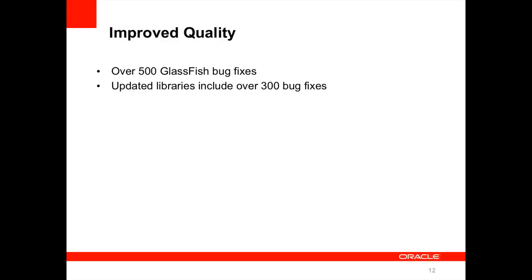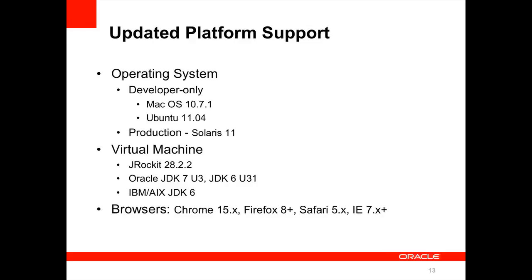We've made quite a few quality improvements. The core of GlassFish server itself has had over 500 bug fixes, and the included libraries alone have had over 300 bug fixes. This is the second bug fix release for GlassFish server, and you should notice overall improved quality. We've also updated platform support — this includes incremental updates to operating systems we already support, such as Mac and Ubuntu from a developer perspective. We've added Solaris 11 support and JRockit support — this is the first 3.1 release that formally supports JRockit. We've updated the Hotspot JDK and AIX IBM JDK support, and updated browser support to keep up to date with what we test.